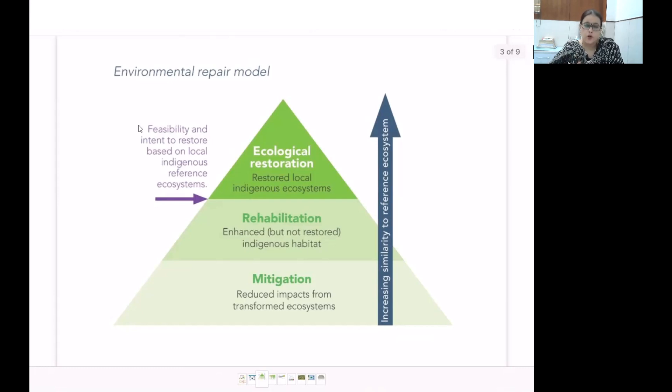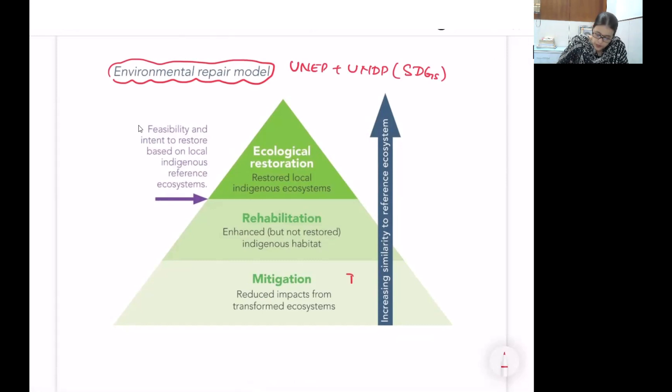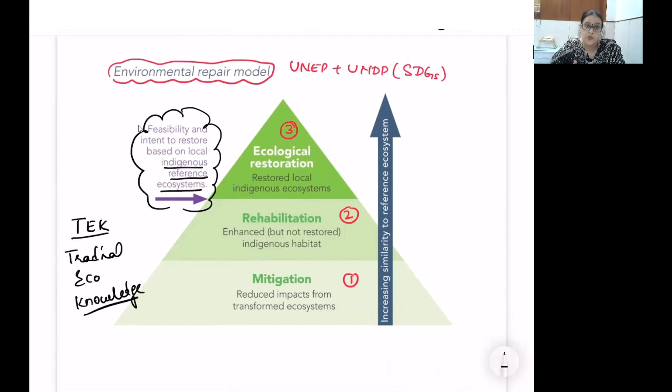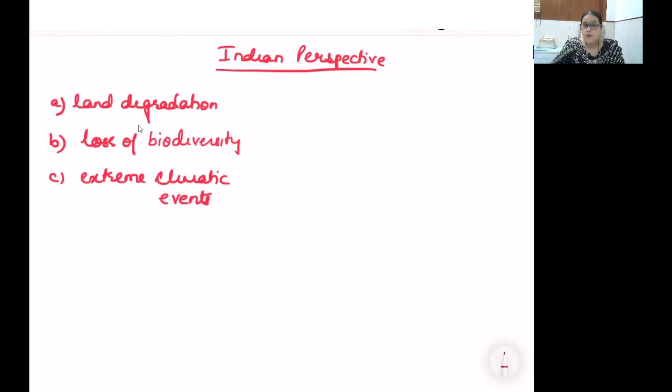After understanding the multiple impacts humans are suffering and will have magnified suffering in the future, let's discuss ecosystem restoration. The general environmental repair model incorporates UNEP and UNDP with three steps: mitigation, rehabilitation, and restoration. These commonly discussed terms are explained in the pyramidical diagram. But what I want to emphasize is traditional ecological knowledge (TEEK). When we talk about ecosystem restoration, TEEK is the most practically feasible component. Traditional forest dwellers, farmers, and people at the grassroots provide the most practical edge for restoration models.